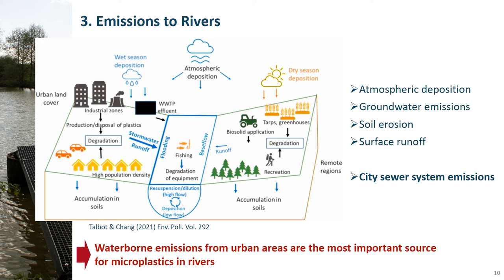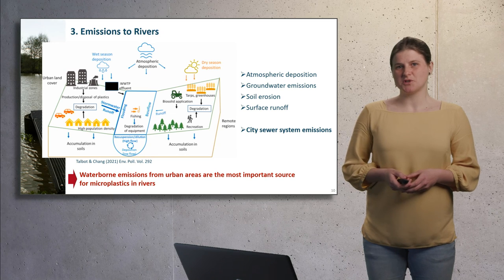In contrast, a strong relationship with urban areas is reported. Overall, for rivers, waterborne emissions from urban areas with a high degree of sealed surfaces are the most important source for microplastic in rivers. Let's take a look at the major transport pathways from an urban area to a river — the city sewer system.